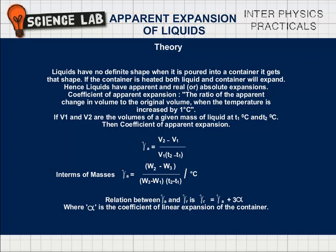In terms of masses, gamma A equals W2 minus W1 by W3 minus W1 into T2 minus T1 per degree centigrade. Relation between gamma A and gamma R is gamma R equals gamma A plus 3 alpha, where alpha is the coefficient of linear expansion of the container.